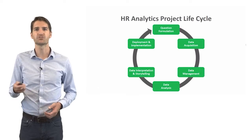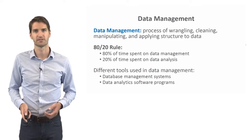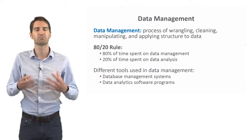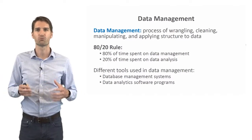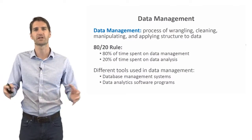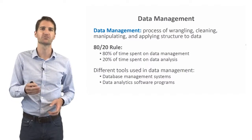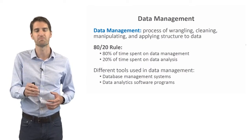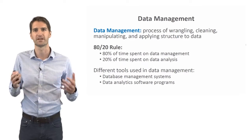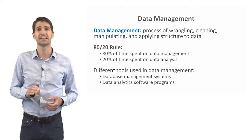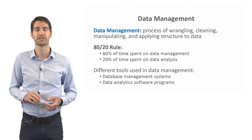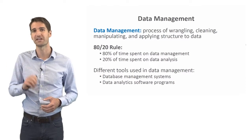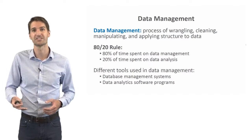The next phase is data management — a huge phase. Data management is the process of wrangling, cleaning, manipulating, and applying structure to the data. Rarely do data come perfectly formed and ready to be analyzed. The general data science 80-20 rule states that 80% of your time is spent on data management and only 20% on data analysis. The instructor suggests an even more conservative estimate: a 95-5 rule, where 95% of your time is spent on data management and only 5% on actually analyzing the data.